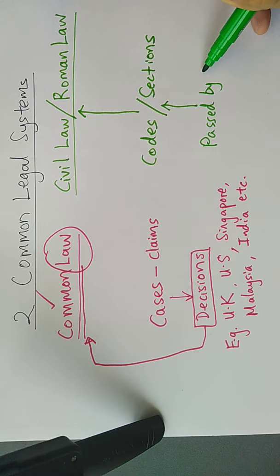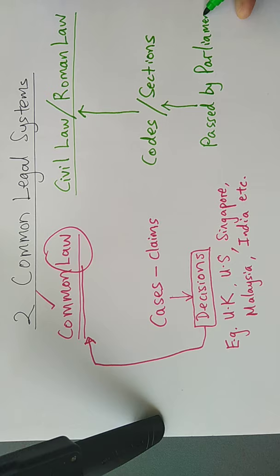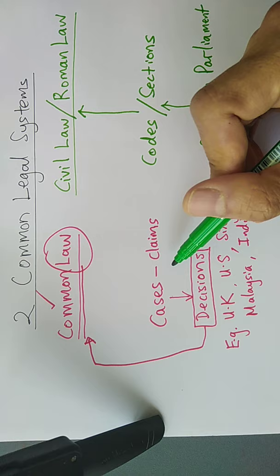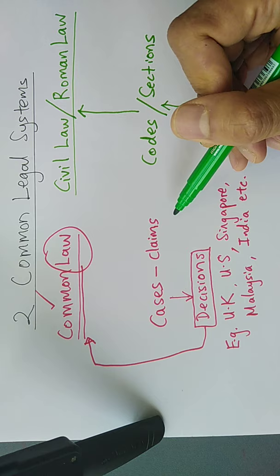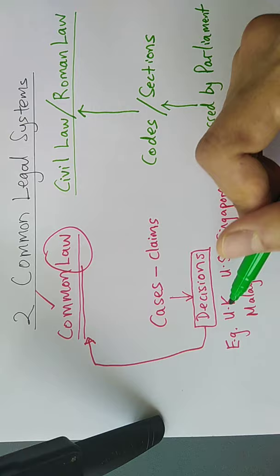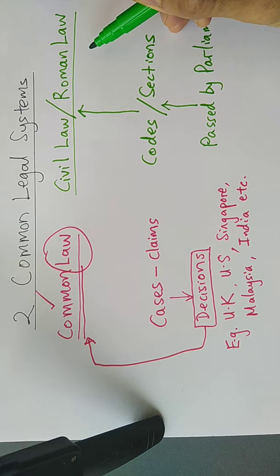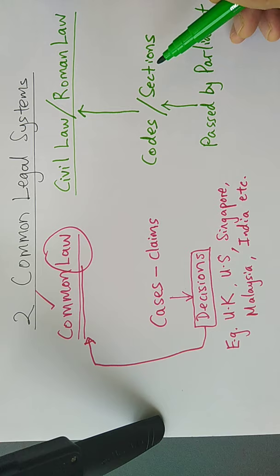They are passed by the parliament or government. So Thailand adopts this civil law system. There's no need to base on cases for people to bring the case, bring the claim to the court and the court makes a decision, then the decision becomes the law. You don't have to depend on people making claims to the court. If people don't make the claims to the court, there's no decisions and therefore there's no common law. But Thailand doesn't have to depend on that. Thai lawyers just refer to the matra, the codes, the sections for the law.